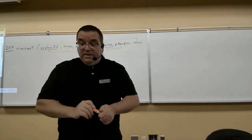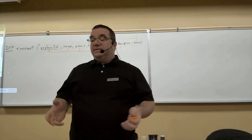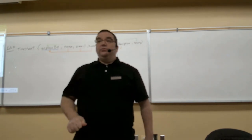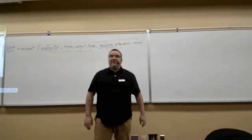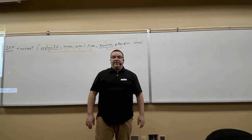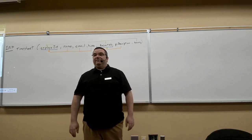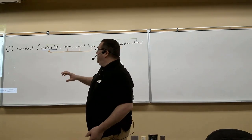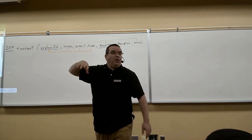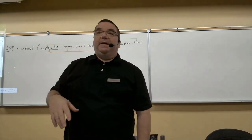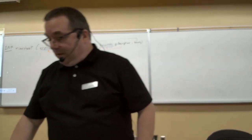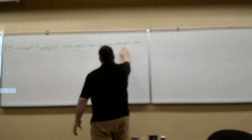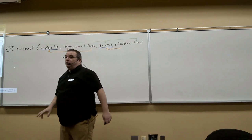For things to be in second normal form, it must first be in first normal form and there can be no partial dependencies. A partial dependency is when a value depends only on part of the key. We know that name, email, and hourly rate depend only on employee ID, and project description depends only on project number. So we've now identified two kinds of dependencies.